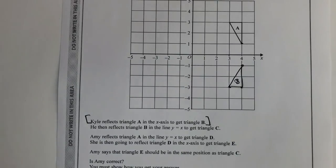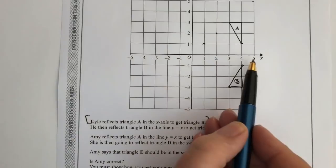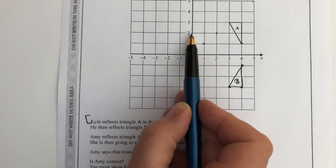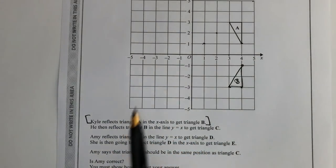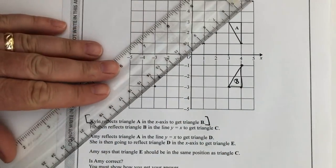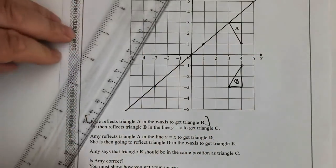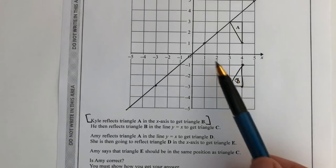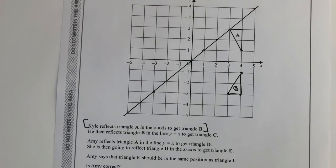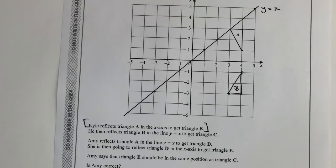He then reflects triangle B in the line y equals x to get triangle C. This is where it's a little bit tricky because y equals x is where the value of x and the value of y are the same - so if x is five then y is also five; if x is two then y is also two, and it's the same for negative numbers. So I can draw a line through here that gives me the line y equals x, and I need to take triangle B and reflect it in this line.